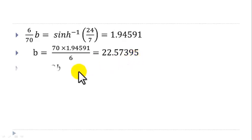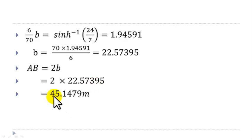So, therefore, the distance AB is 2 times b. That is 2 times 22.57395, and that will give us 45.14791 meters, which is approximately to the nearest whole number 45 meters.